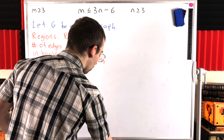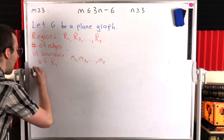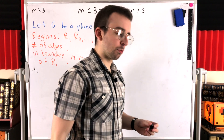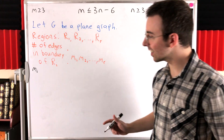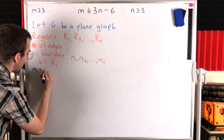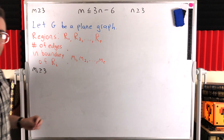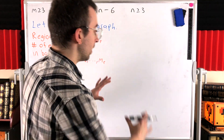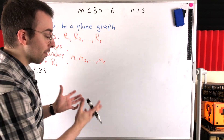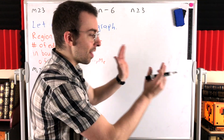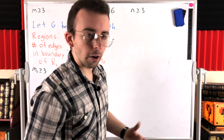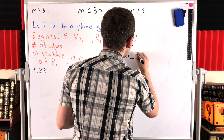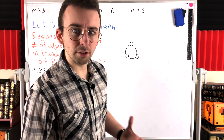Now, what do we know about each Mi — the number of edges in the boundary of each region? I claim Mi is greater than or equal to three. How do we know that? Well, if a region isn't the exterior unbounded region, then it must be enclosed by some closed curve. In graph theory terms, a closed curve in the plane has to be a cycle, and a cycle has at least three edges.